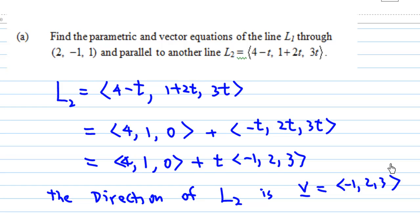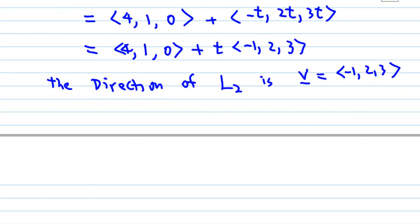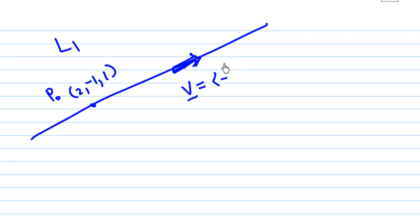Since L1 passes through the point (2, -1, 1), this is what we call p₀ here, and the direction of the line v is parallel to L2. From our earlier calculation, the direction v is (-1, 2, 3).